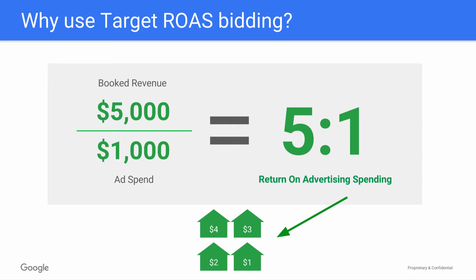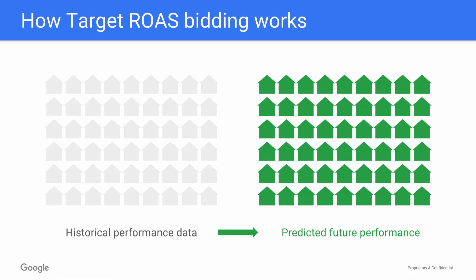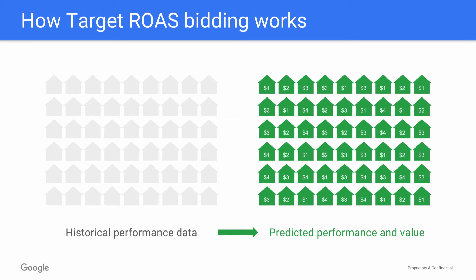The question you might be asking is: how does Target ROAS know where to set bids for a property? For the properties where you're using Target ROAS bidding, Target ROAS predicts future conversions and the total value of those conversions based on your historical performance data. From there, max CPC bids are automatically set across your properties based on their potential to help you meet your Target ROAS goal.